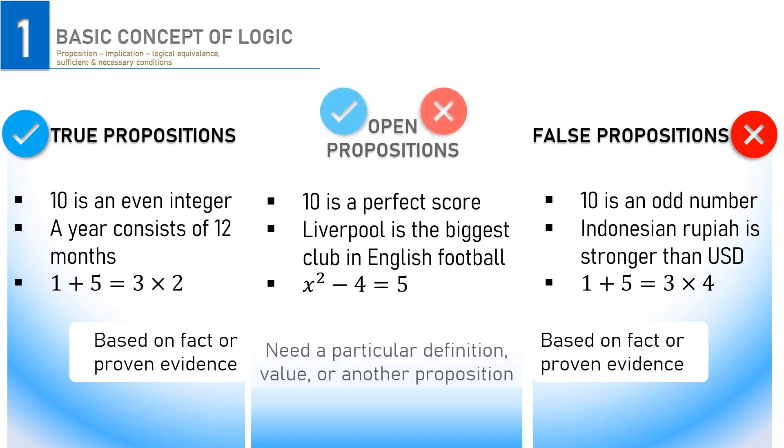So, whenever the assertions need a particular definition, value, or another propositions to become true or false, the assertions are still open or we have the so-called open propositions.